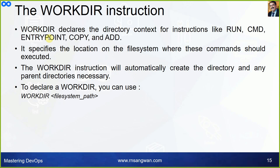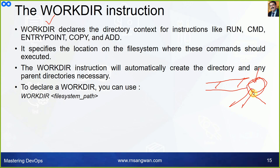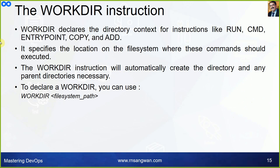WORKDIR is used when you need to be in a specific directory in the image file system to execute commands, whether or not the directory exists. It declares the directory context for instructions like RUN, CMD, ENTRYPOINT, COPY, and ADD — specifying where these commands should be executed. WORKDIR will automatically create the directory and any necessary parent directories. Syntax: WORKDIR followed by the path.